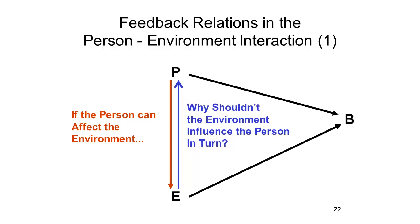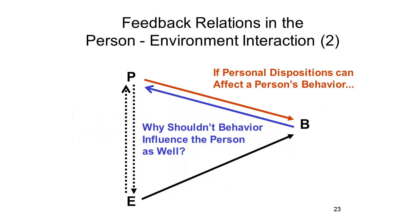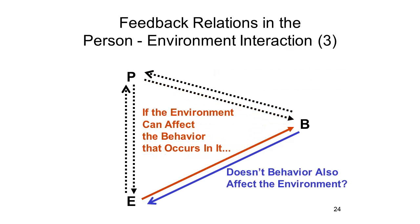But that doesn't have to be the end of it. If the person can affect the environment, why shouldn't the environment influence the person in turn? And it certainly does. On the whole, people become happier when they're in the company of happy people, and sadder when they're in the company of sad people — the mood state of the surrounding people can influence the individual's own mood state. And if personal dispositions like traits and attitudes can affect a person's behavior, why shouldn't behavior feed back to shape those very traits and attitudes? When we're learning a new skill like tennis or piano playing, we may initially have doubts, but then we try and if we succeed we say, hey, I can do that — the behavior feeds back to change the person who engaged in the behavior.